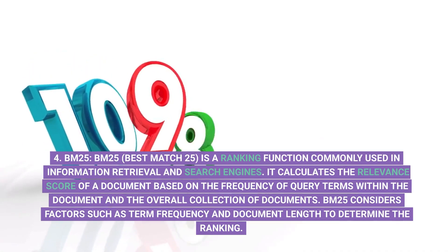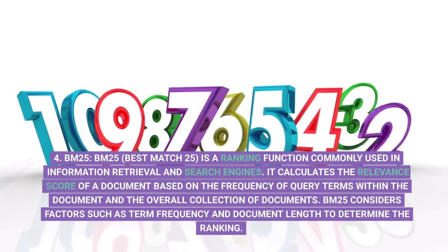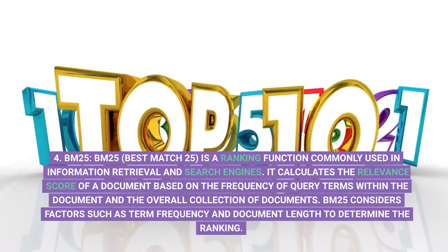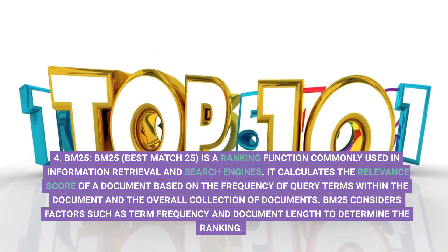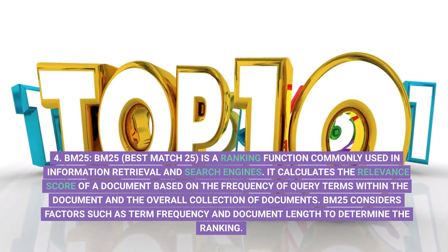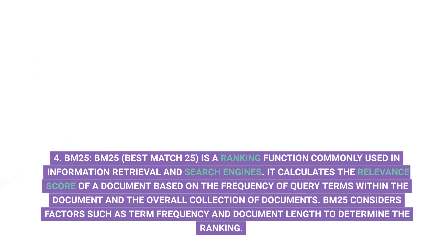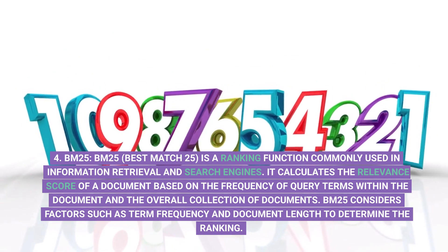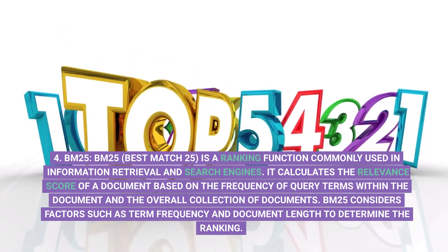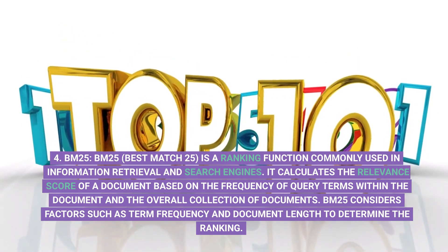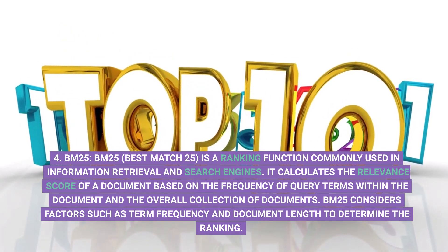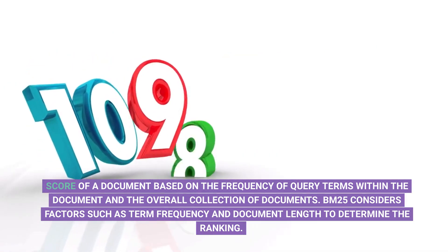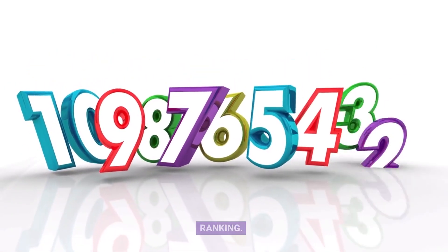4. BM25. BM25, or Best Match 25, is a ranking function commonly used in information retrieval and search engines. It calculates the relevance score of a document based on the frequency of query terms within the document and the overall collection of documents. BM25 considers factors such as term frequency and document length to determine the ranking.